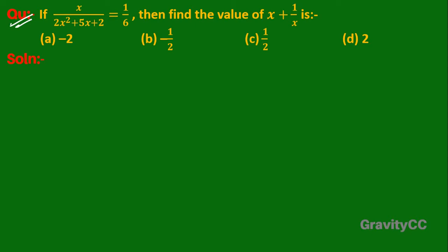If x upon (2x² + 5x + 2) equals 1 upon 6, then find the value of x + 1 upon x. So here, given that x upon (2x² + 5x + 2) is equal to 1 upon 6.